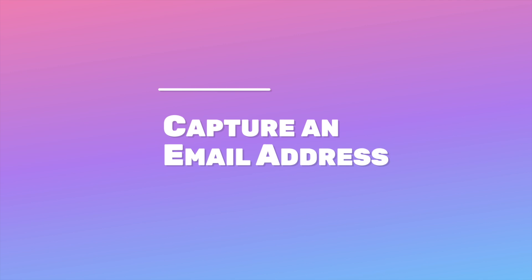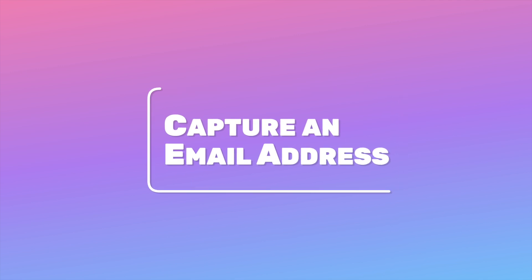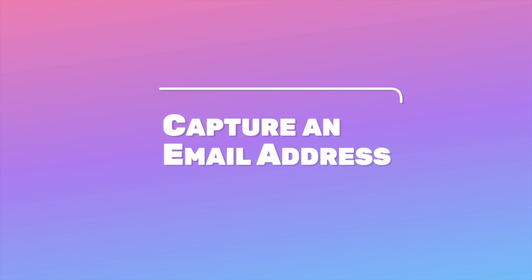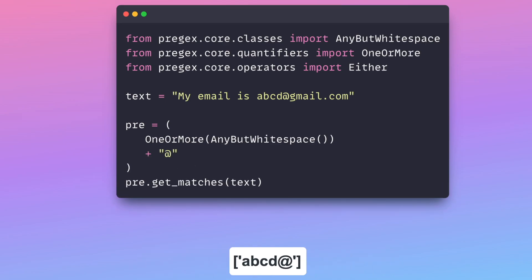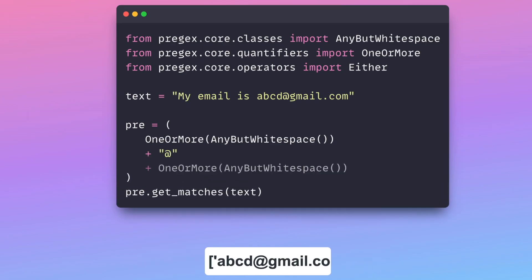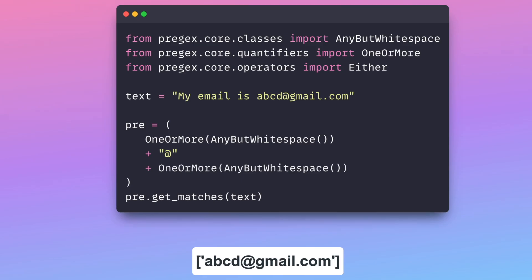Now, let's utilize what we have learned so far to capture an email address from a text. To create a pattern that matches an email address, we start with any letters excluding whitespace, followed by the at symbol and then the domain name of the email address.